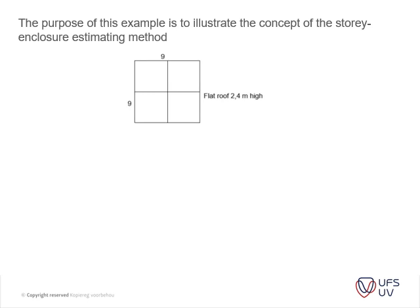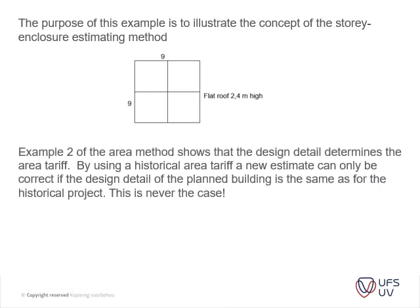For the purpose of this example, we are illustrating the concept of the story enclosure method. We look at a building — obviously designed by a QS — it is a square building, 9 by 9 metres on plan, with an elevation of 2.4 metres. Example 2 of the area method shows that design detail determines the area tariff. Using a historical area tariff, a new estimate can only be correct if the design detail of the planned work matches the historical project — which is never the case.